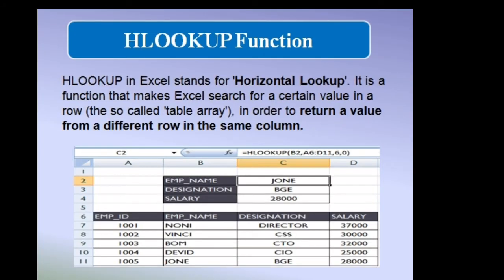HLOOKUP in Excel stands for horizontal lookup. It is a function that makes Excel search for a certain value in a row in order to return a value from a different row in the same column.